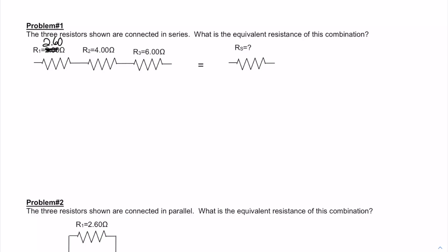This is circuits problem number one, where three resistors are shown connected in series. What is the equivalent resistance of this combination? And depending on what version of the sheet you have, R1 should be 2.60 ohms, so double check your version has that.